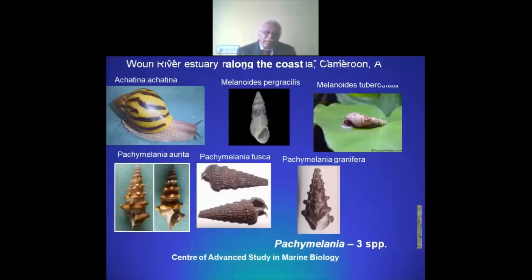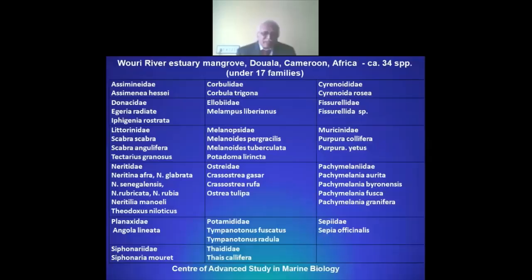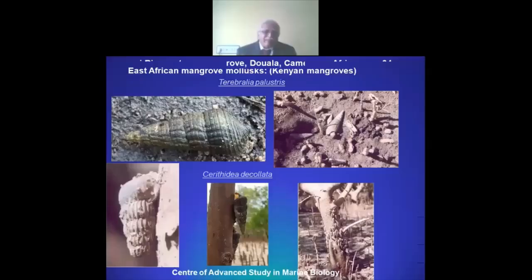The mangrove-associated malacofaunal assemblage in Cameroon, Africa, includes approximately 34 species belonging to 17 different families. This is the Kenyan mangrove malacofauna distribution, where Terebridae is one important group, and Cerithidea is ubiquitous in its distribution in almost all global mangroves. In Kenyan mangroves, Littorina — the periwinkle — is another important group found distributed and enjoying its occurrence.